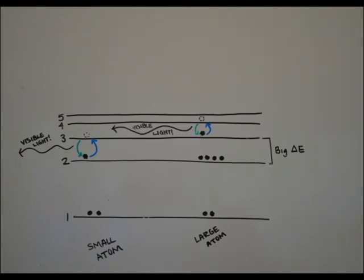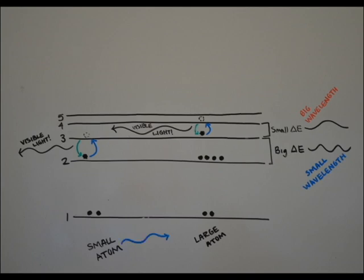There is a big difference in energy between the second and third levels, which corresponds to a short wavelength. And there is a small difference in energy between the third and fourth levels, which corresponds to a long wavelength. Therefore, small quantum dots emit light on the violet end of the spectrum, while large quantum dots emit light on the red end of the spectrum.